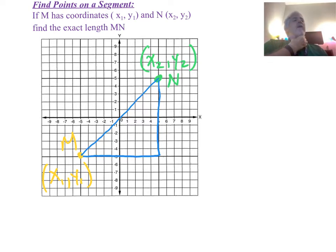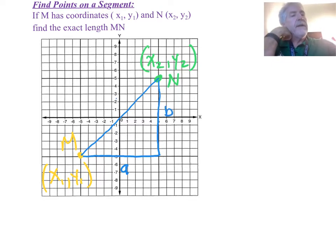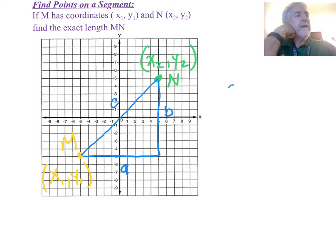What does the Pythagorean theorem say? Well, Pythagorean theorem says that this leg, A squared, plus this leg, B squared, equals C squared. A squared plus B squared equals C squared.